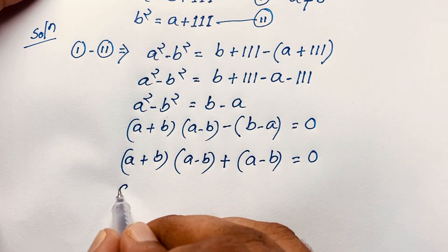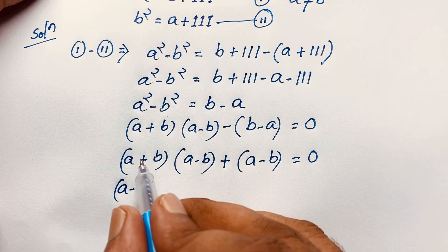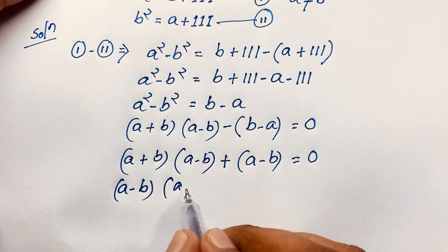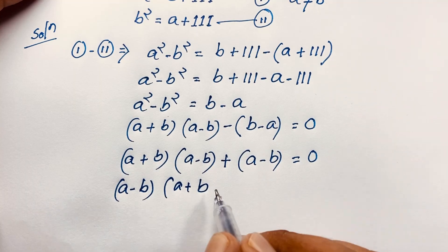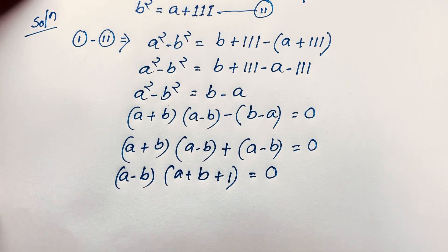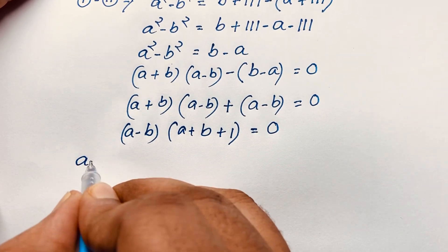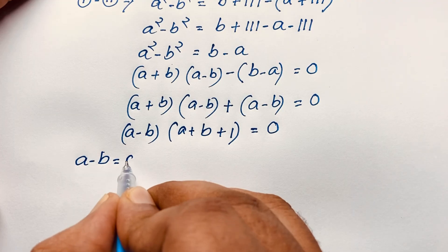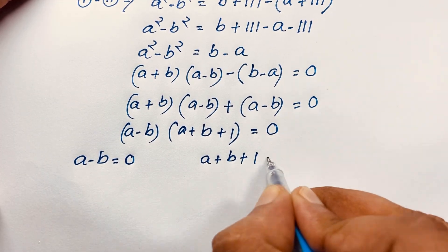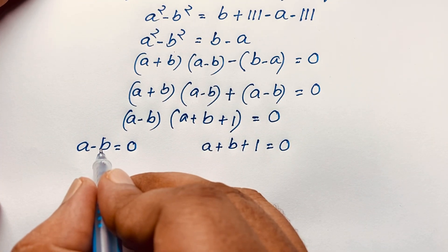Now here, (a − b) is common on both sides. If I take (a − b) as a common factor, we get (a − b) times (a + b + 1) equals 0. This gives us two cases: our first case is a minus b equals 0, and the other case is a plus b plus 1 equals 0.